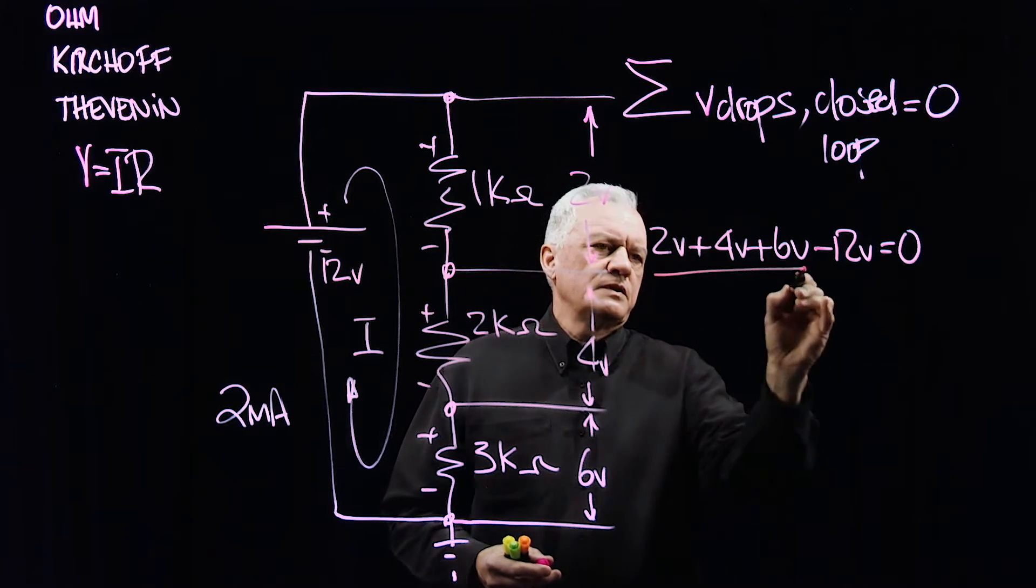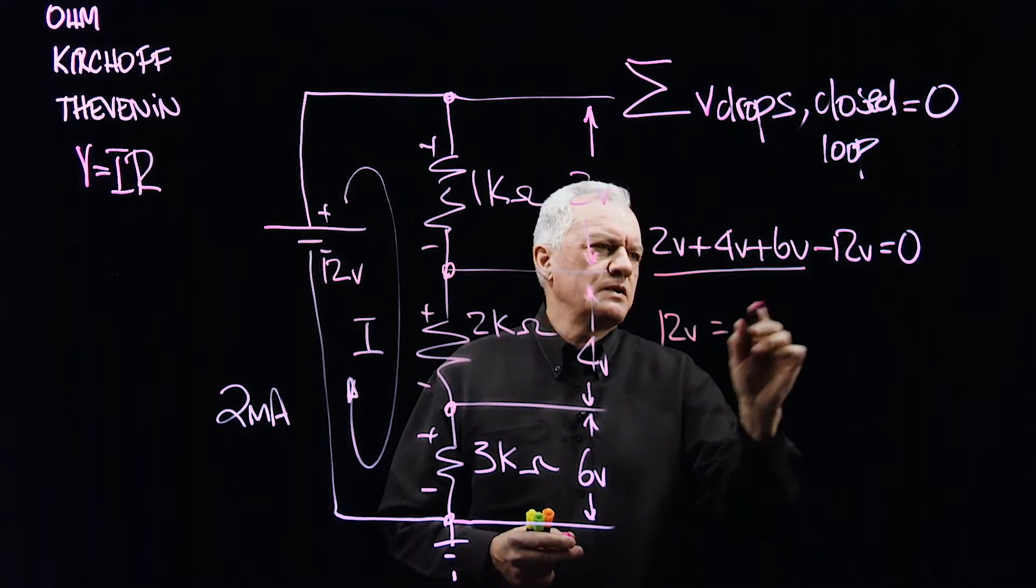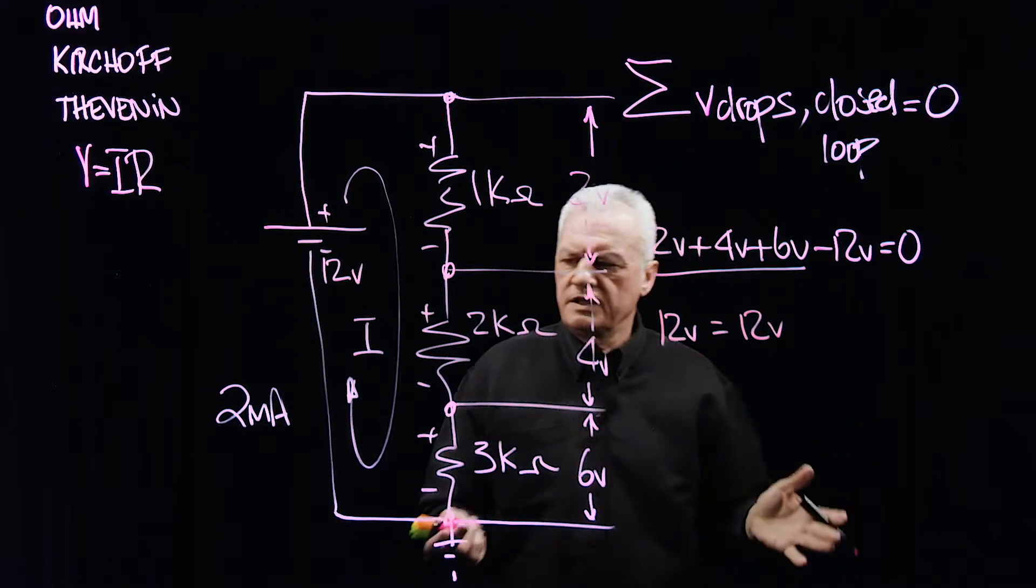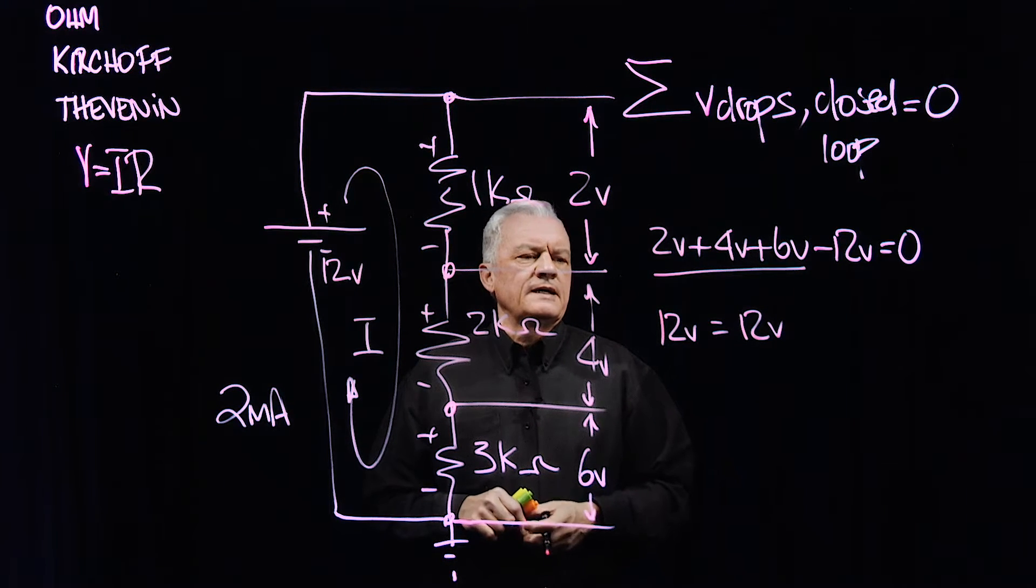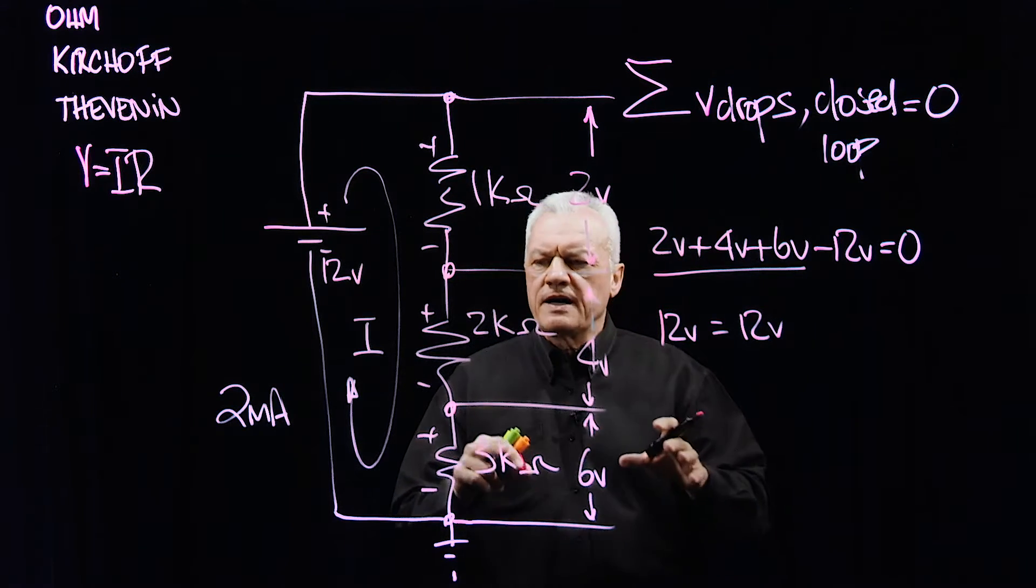Does that add up? This is 6, 4, 10 is 12 volts equals, other sign, reverse the sign, 12 volts. Of course, they're equal, and that's what an equation is.